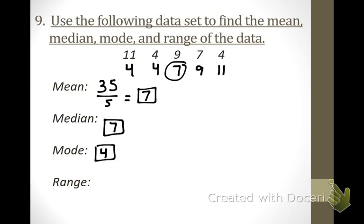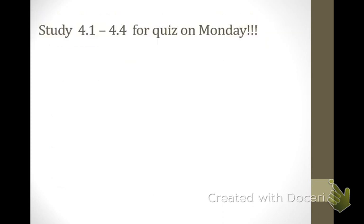Finally, the range — how do I find it? Take the biggest number and subtract the smallest number. What do you get? 7. Who got all four correct on their own? Excellent job. You have a quiz coming up on Monday — if you understand this review sheet, you should do great.